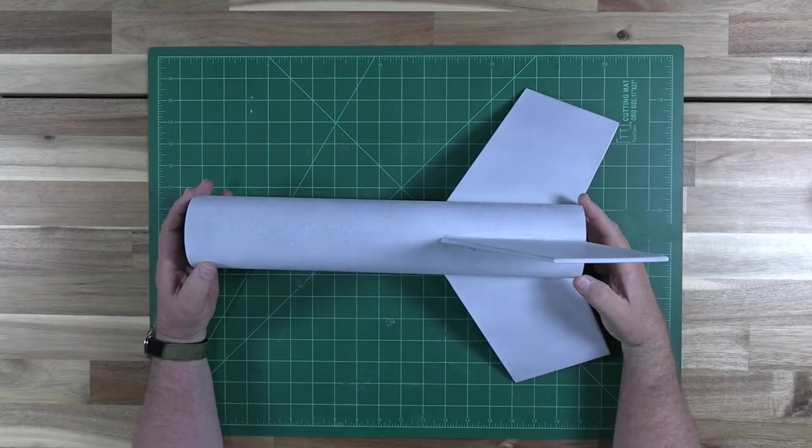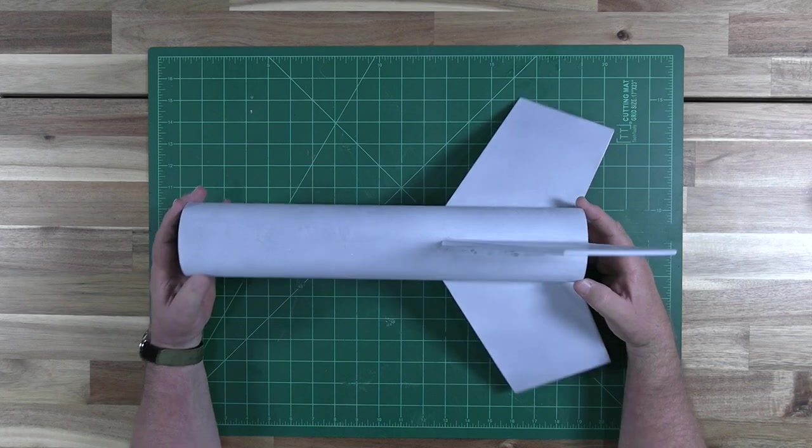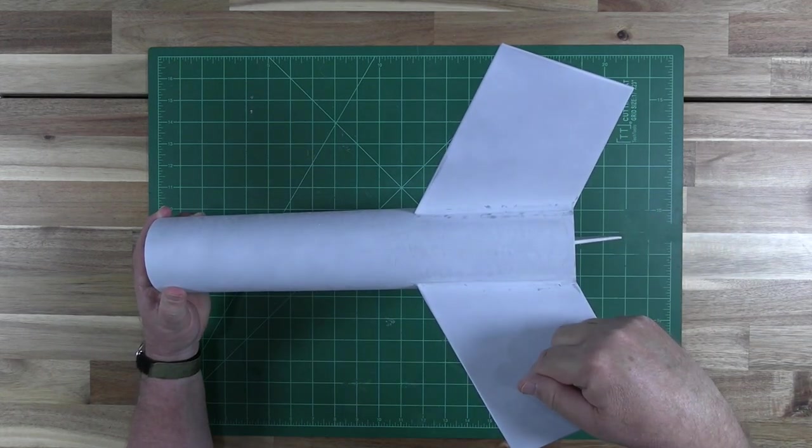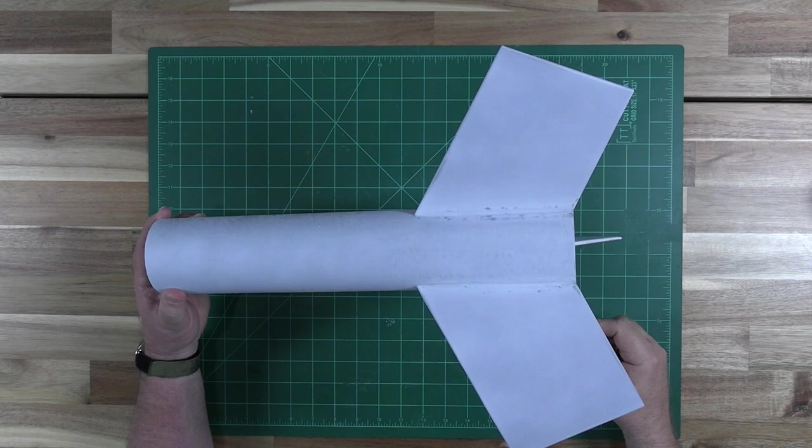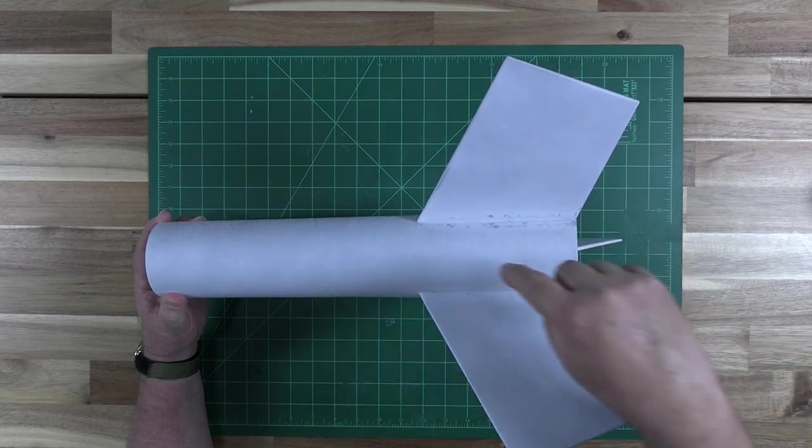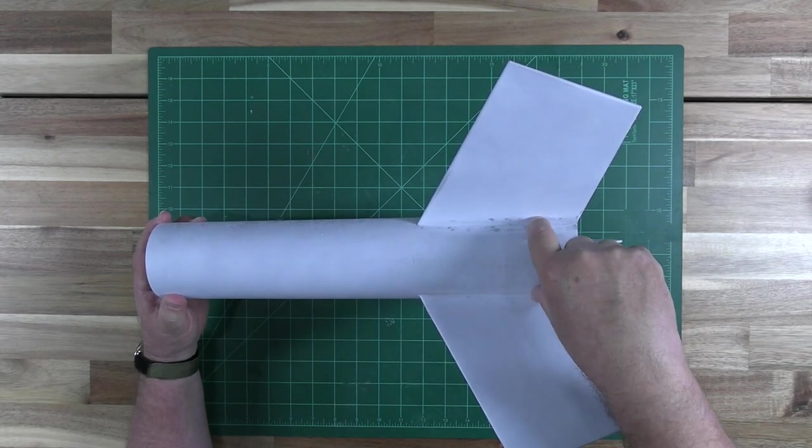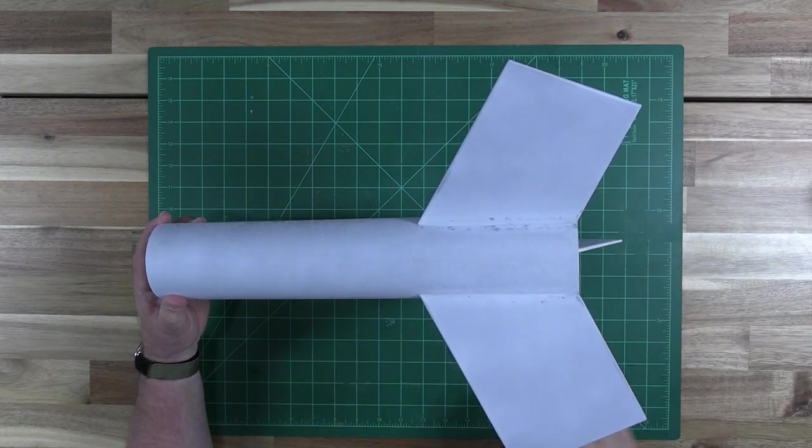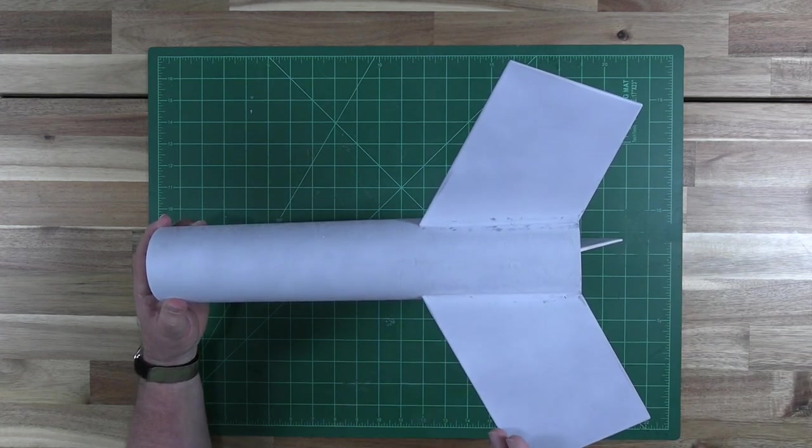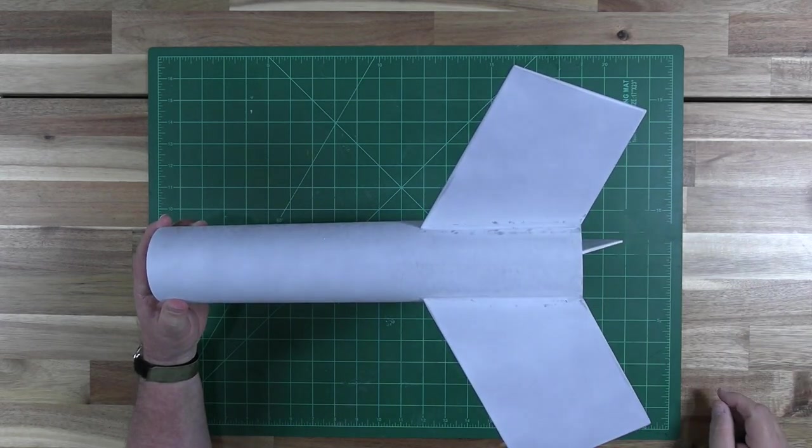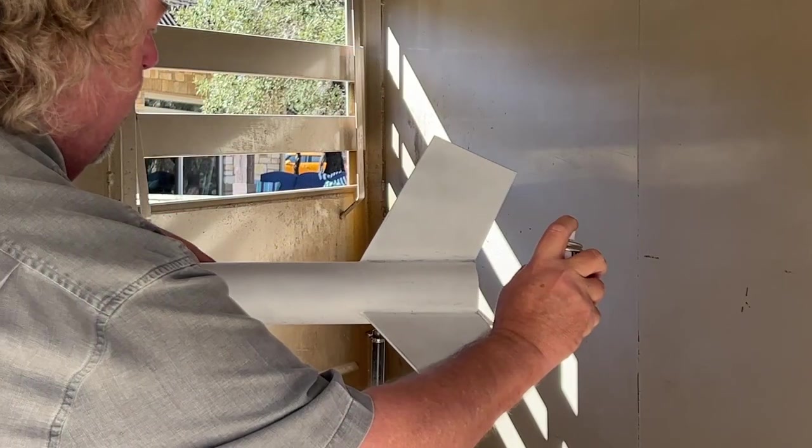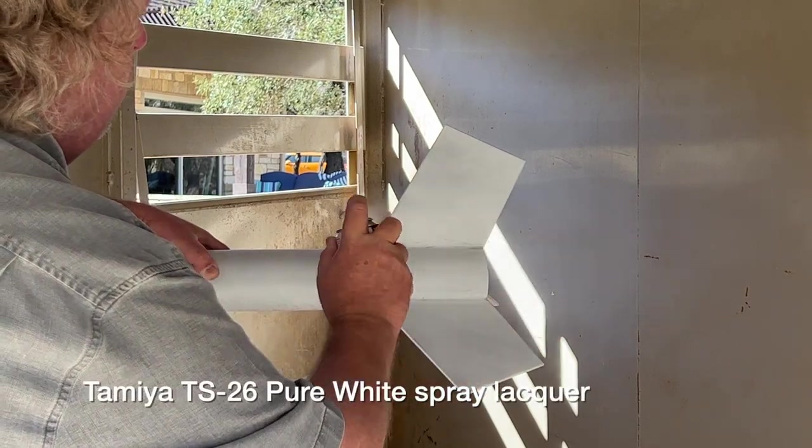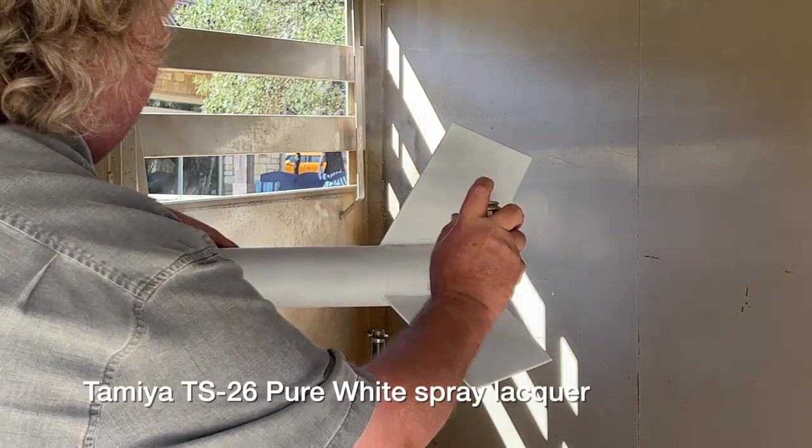The first color we apply will be the white base for the invasion stripes. These will be on the upper and lower surfaces of the wings, which in this case are these two fins. We'll also apply white to the belly area between the two fins slash wings for the invasion stripes there. Now more white will also go onto the leading edges of the wings as a base for the yellow details. We'll be using Tamiya TS26 Pure White Spray Lacquer for this step.